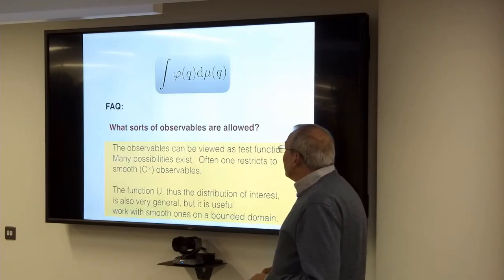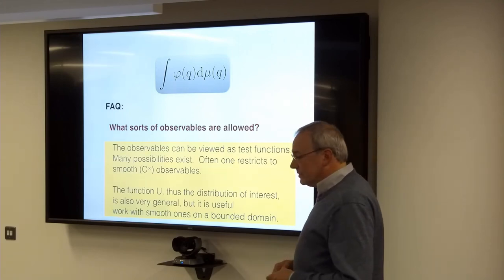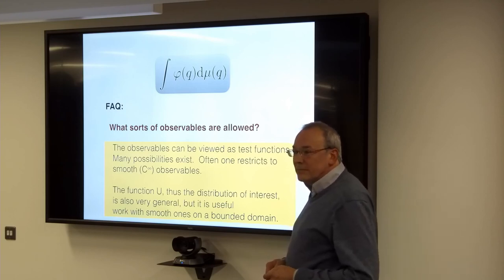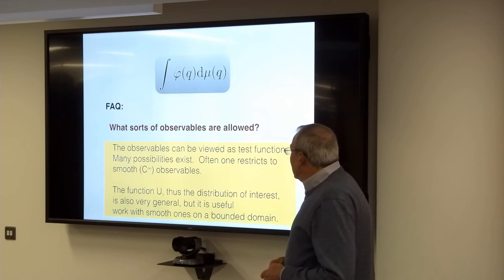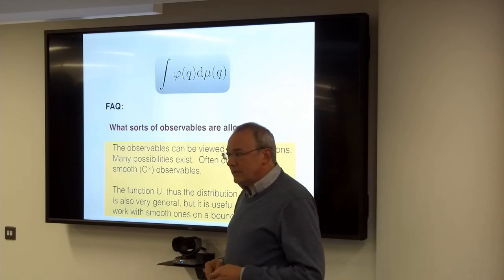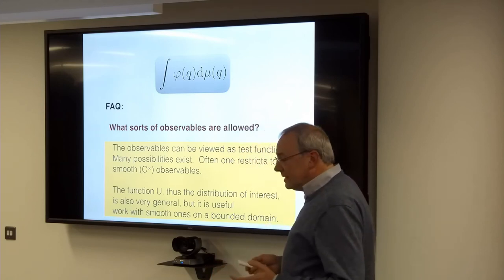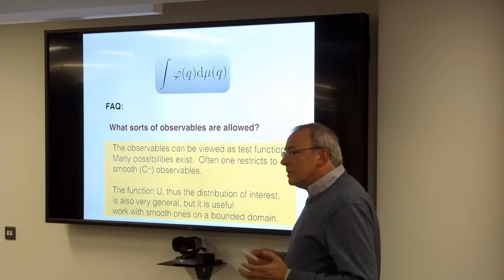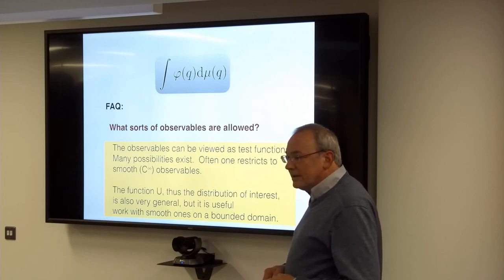What sort of observables are allowed? Really, you can have anything you want. You could also ask about the function U — there are going to be some restrictions to make the problem sensible so you can normalize the integral. In most cases we deal with a smooth function on a bounded domain. An important thing is that the density concentrates the measure so we can do these calculations in a practical way.